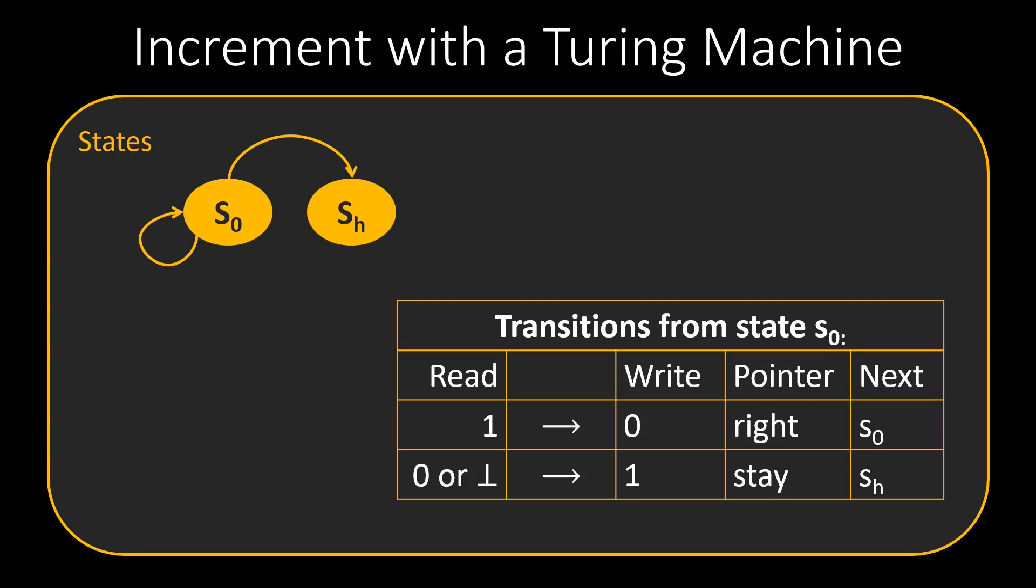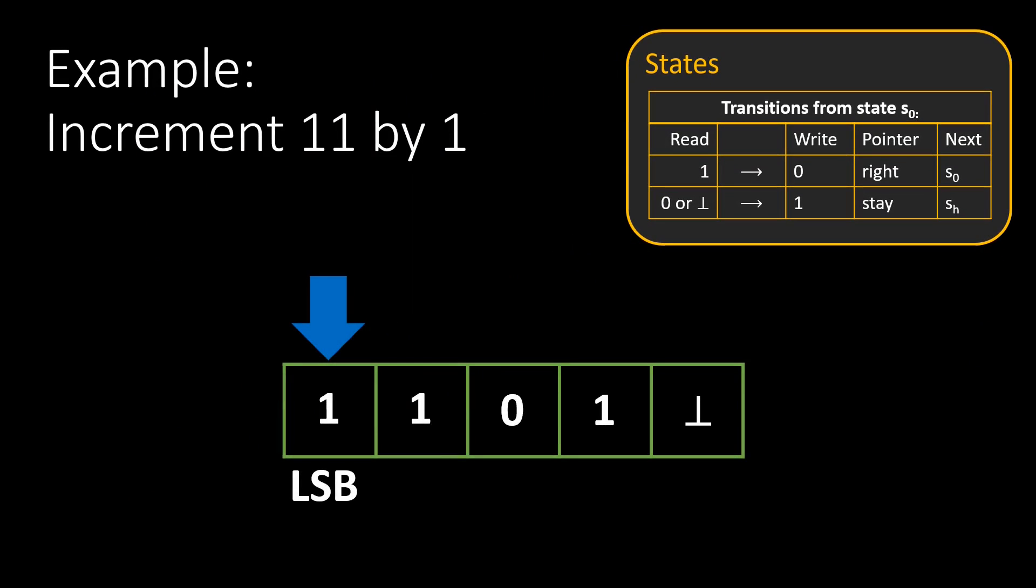Let us try this with another example. We want to increment the number 11. The binary representation of 11 is 1011. We start at the least significant bit, which is 1. The machine reads this 1, writes a 0, and moves the pointer 1 cell to the right. We stay in state S0.